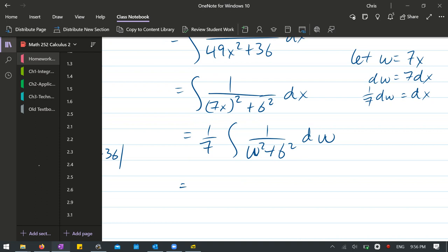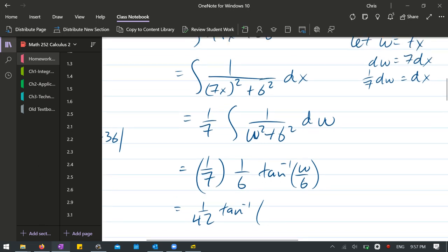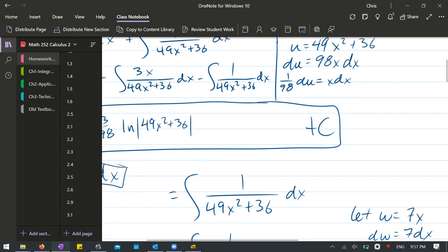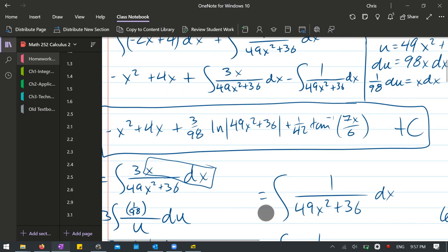1 over 42 tan inverse 7x over 6, plus C. There we go.